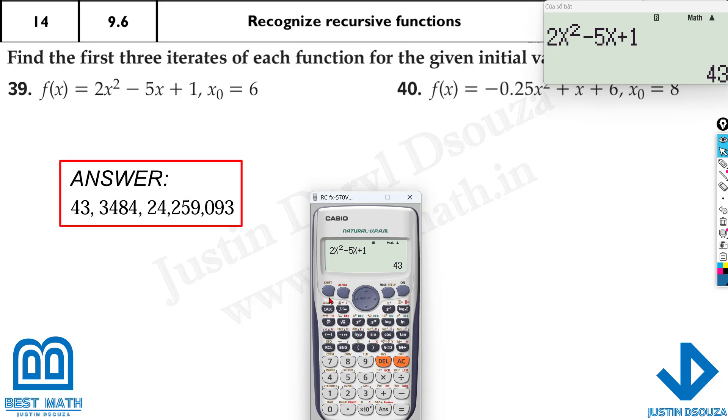The first answer is 43, but what about the next one, 43 over here, that'll give you 3,484, and lastly 3,484 gives you, it's a huge number again, 24,259,093.